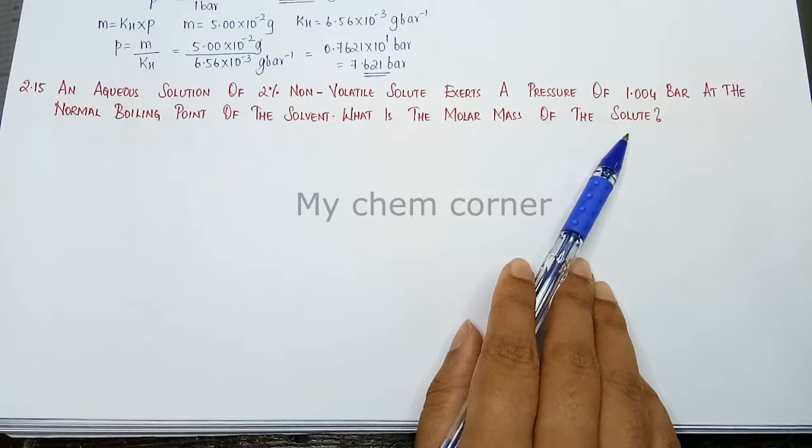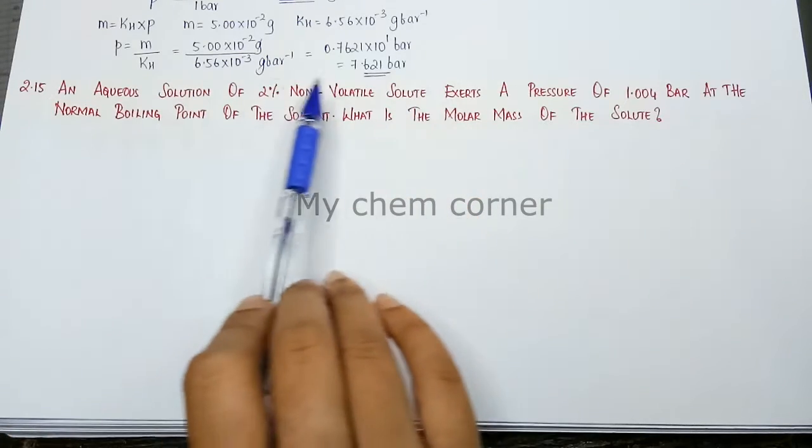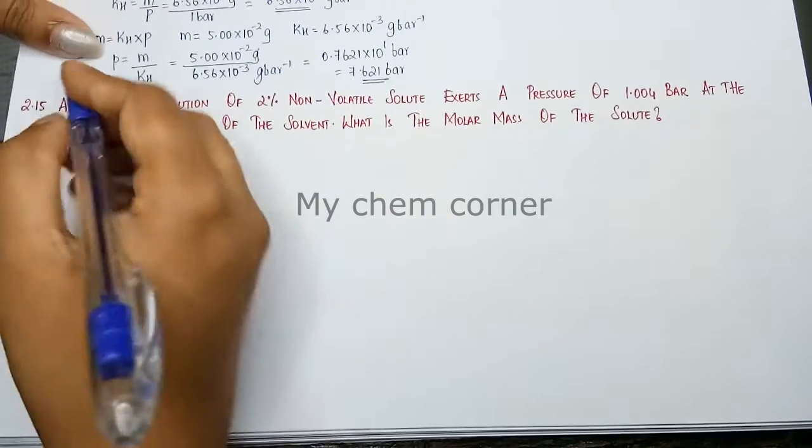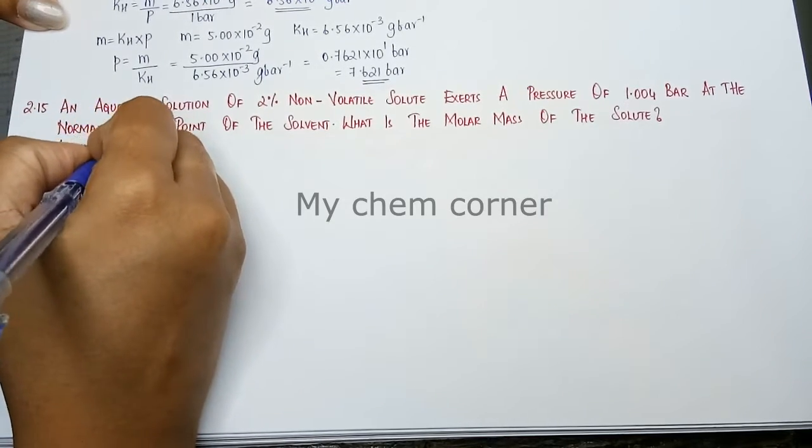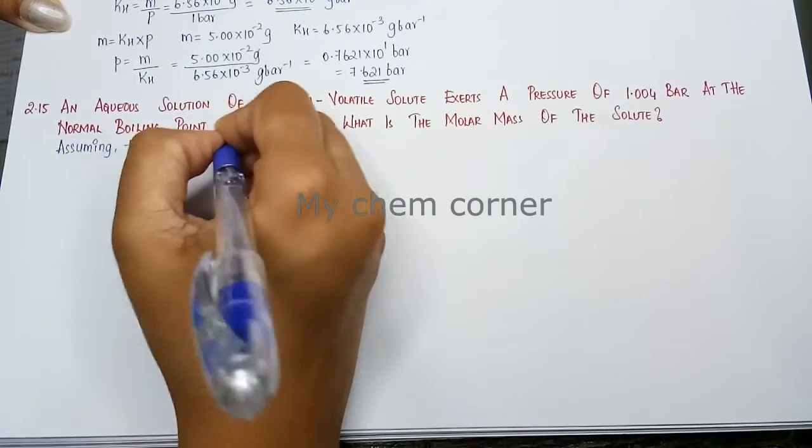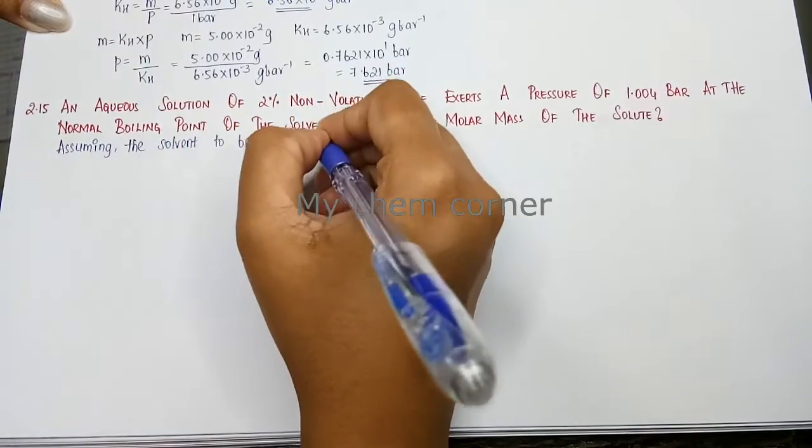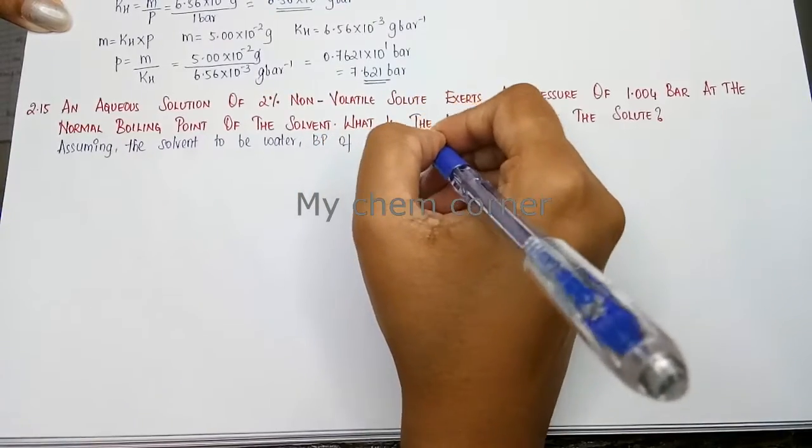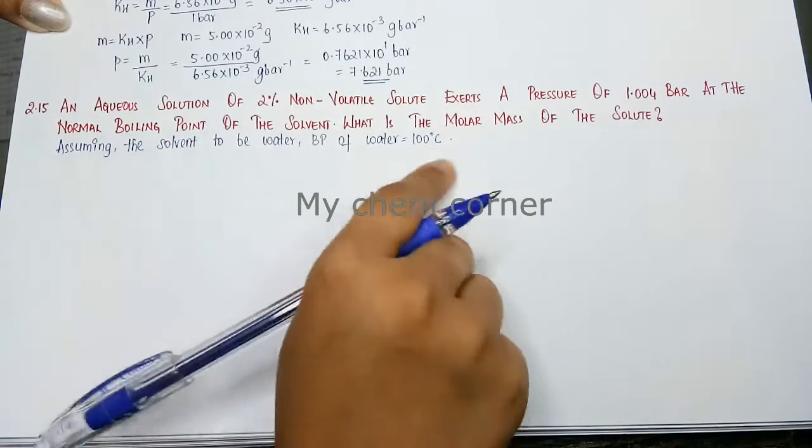So here when you are saying a solution we will consider the solvent as water. Assuming the solvent to be water, we can say that the boiling point of water is 100 degree celsius. We are doing this because normal boiling point. So we are just considering here.